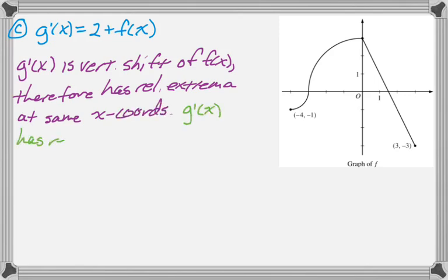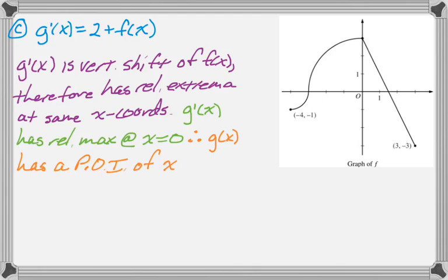So g prime has a relative max at x equals 0. And if that's the case, g of x must have a point of inflection at x equals 0. And that's pretty much the whole thing for that one.